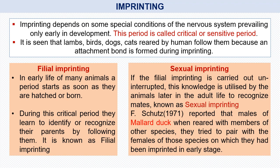Imprinting may be filial imprinting or sexual imprinting. In filial imprinting, during the critical period early in life, young animals learn to identify and recognize their parents by following them. If filial imprinting is carried out uninterrupted, this knowledge is later utilized in adult life to recognize mates — known as sexual imprinting. It has been reported that male mallard ducks, when reared with members of other species, tried to pair with females of those species on which they had been imprinted at an early stage.